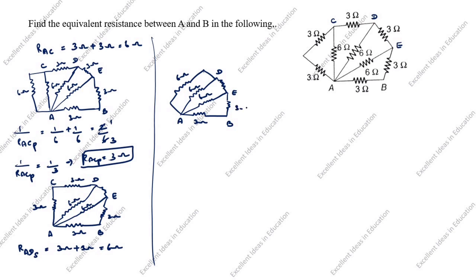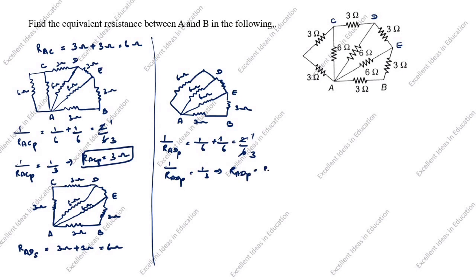In the new drawing with nodes A, B, E, D, we have 6 ohm, 6 ohm, 6 ohm, 6 ohm, 3 ohm, 3 ohm. These two resistances are in parallel: 1/R_AD_parallel = 1/6 + 1/6 = 2/6, so R_AD_parallel = 3 ohm. Next we redraw again.